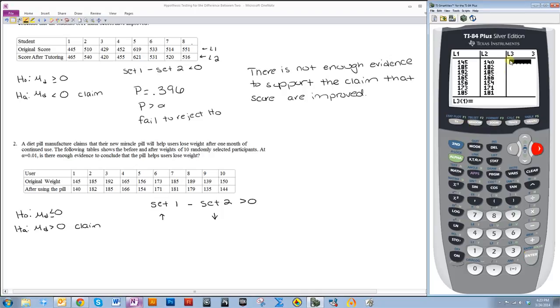Now what I want to do is go up to L3, and I want to hit second L1 minus second L2, and then it'll go ahead and populate these differences for me. So I'm going to perform a t-test on this column only. So I go to stat, test, number 2 is t-test. Data is already highlighted, zero is already there, L3 is already there, frequency is already there. The only thing I need to change is what my alternative hypothesis is. So I highlight that, press enter, then I go down to calculate, press enter.